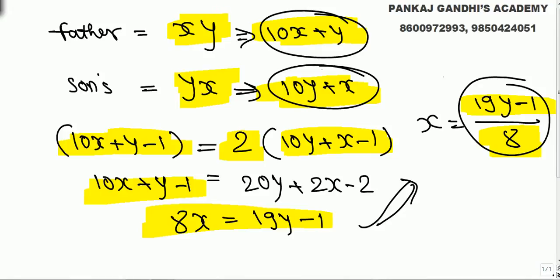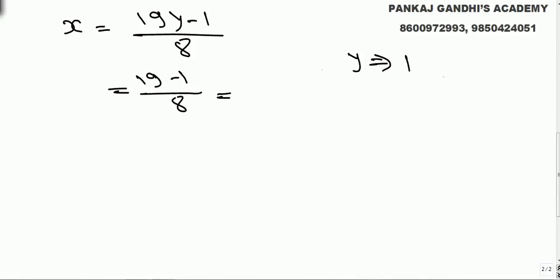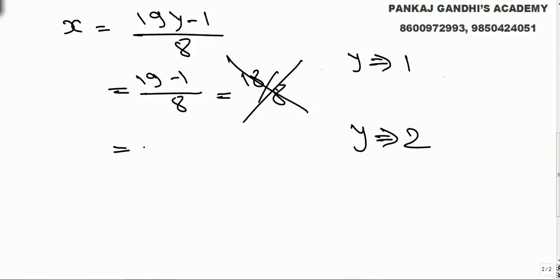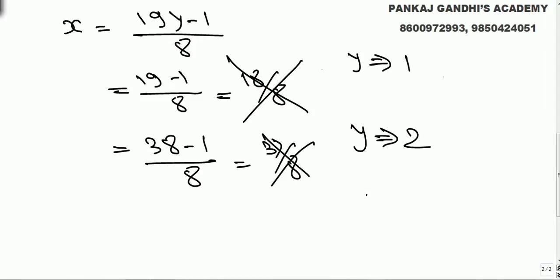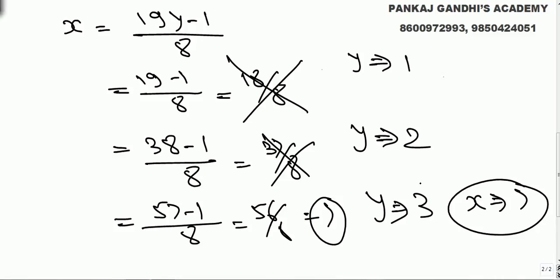We need x and y as digits, so they should be integers. One way is trial and error on (19y - 1) / 8. If we put y = 1, we get (19 - 1) / 8, which is not a whole number. If we try y = 2, (19×2 - 1) / 8 is again fractional. We try y = 3: (57 - 1) / 8 = 56 / 8 = 7. So it works — if y = 3, we get x = 7.